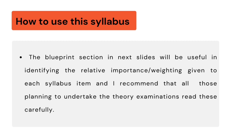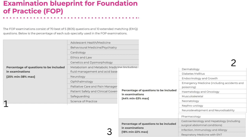Now the question is how can we use this syllabus? The blueprint section in the next slides will be useful in identifying the relative importance or weighting given to each syllabus item, and I recommend that all those planning to undertake the theory examination should read these carefully. This is the examination blueprint for Foundation of Practice. The FOP examination consists of 70 best-of-5 questions and 10 extended matching questions. The syllabus is divided into 3 groups: Group 1 is minimum 25% to maximum 38%, Group 2 minimum 44% to maximum 53%, and Group 3 minimum 18% to maximum 22%.